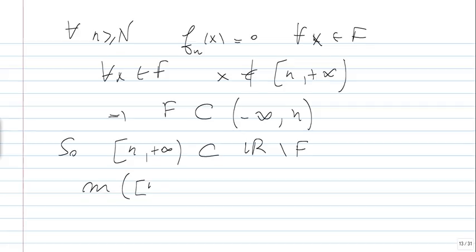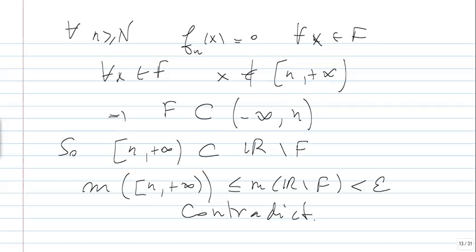So [N, +infinity) is a subset of R minus F. This gives a contradiction, because this implies the measure of [N, +infinity) is less than or equal to the measure of R minus F, which is less than epsilon. So the conclusion is not valid when the measure is infinite. However, there is something extremely interesting here — a theorem discovered by Lusin.